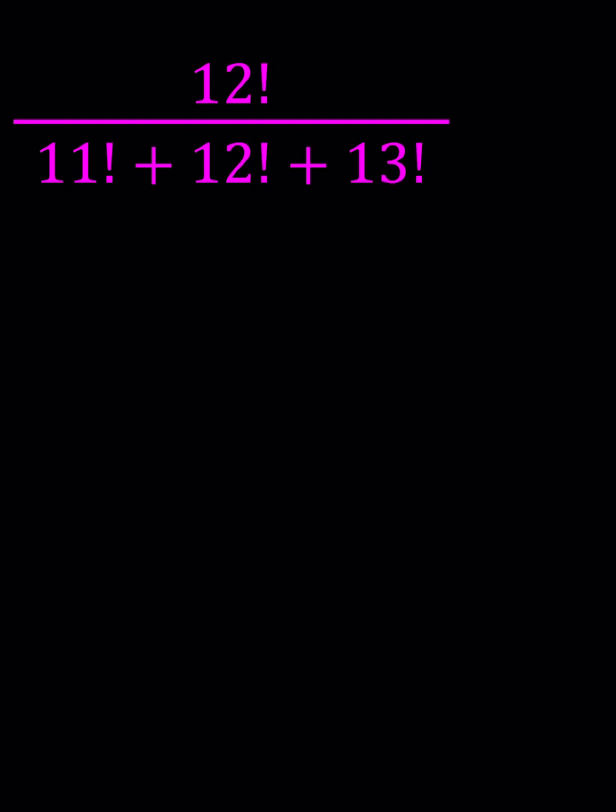Why don't we go ahead and write 12 factorial as 12 times 11 factorial and this one as 13 times 12 times 11 factorial. So we can go ahead and factor out 11 factorial in the denominator and then we're going to be getting 1 plus 12 plus 13 times 12 and then 12 factorial can also be written as 12 times 11 factorial.